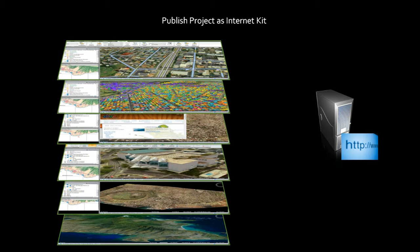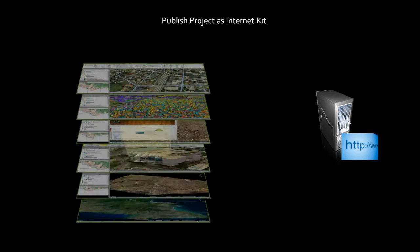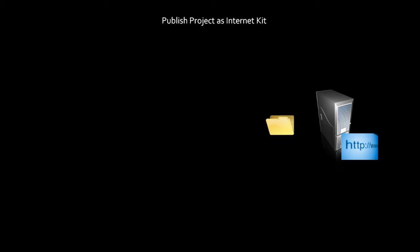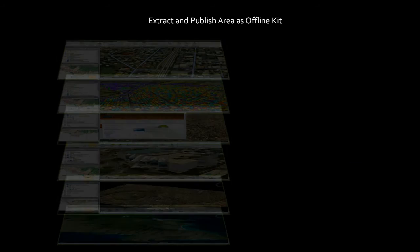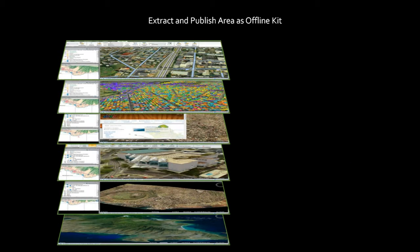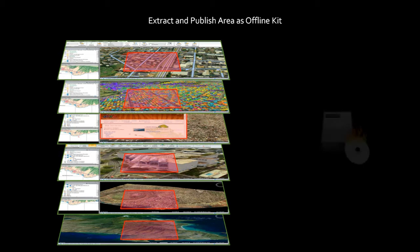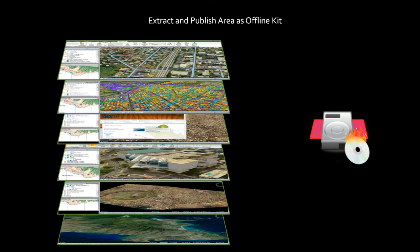The publish internet kit option gathers local files and objects to a kit folder and prepares for publishing to a web server. Extract and publish areas offline kit extracts a geographic subset of the project and copies all its local and network resources to local files for use in a disconnected environment. This method extracts and downloads both raster and feature layers for a selected area of interest from the file system and from the internet, and saves all the data and information to a completely offline kit.